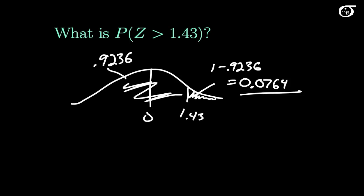Now suppose we wanted to find a probability for a negative value of Z. Suppose we wanted to find the probability that Z is less than minus 1.43. Let's draw that out. Here's our standard normal curve, here's 0, minus 1.43 is over here somewhere, and I want to find that area.